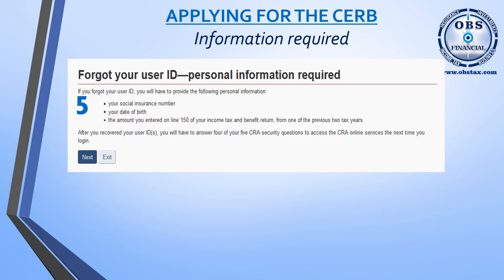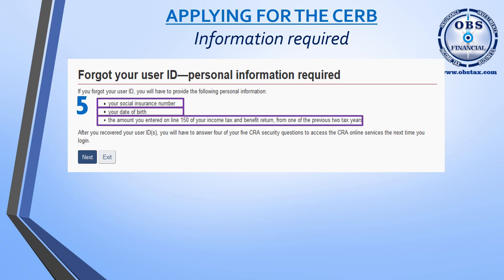Here's where you're going to find out the information you need in order to re-access your user ID. First, you're going to need to know your social insurance number, your date of birth, and the amount that you entered on line 150 — or another line selected by the computer — from your last previously filed tax return.